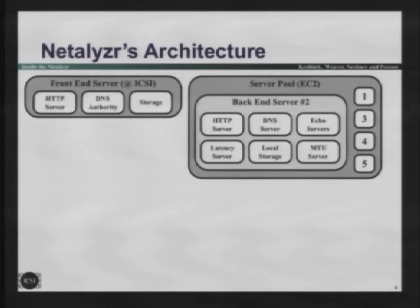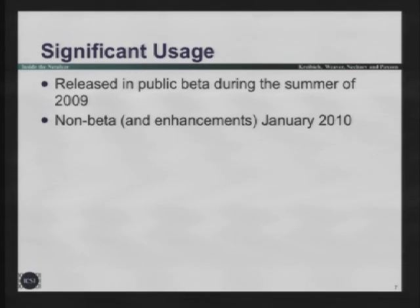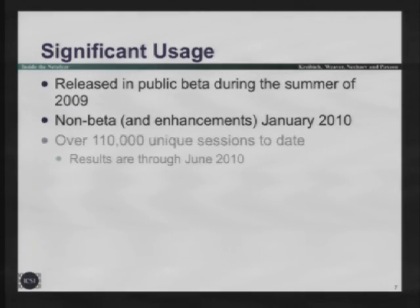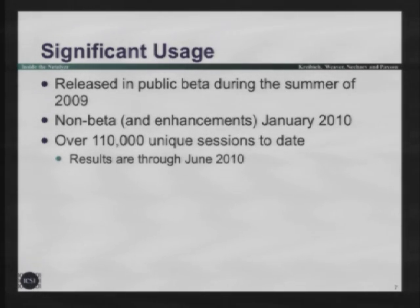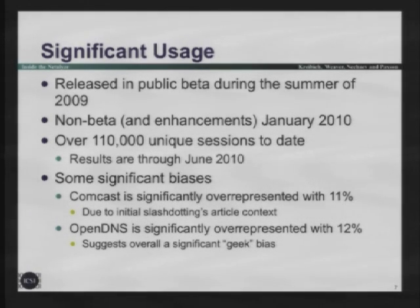Let's discuss some of the results we see. We've got a nice big test suite - we released beta summer 2009, with a non-beta release January 2010 where we added a lot more tests. We've had 110,000 unique sessions so far, and the results I'm going to talk about cover basically a year's worth of data. There are biases in our dataset - geeks like this tool. We can tell because a lot of people are running OpenDNS when they use Netalyzer, and I don't think OpenDNS is 10% plus of all users on the Internet.